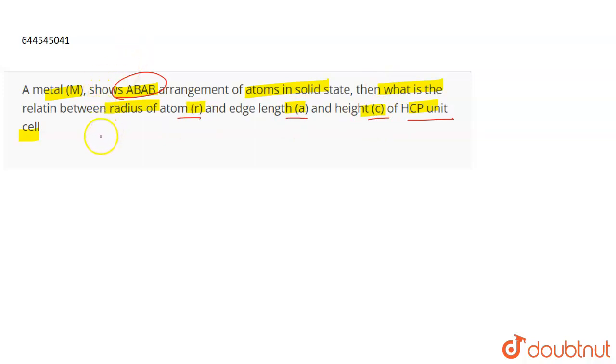Basically one thing that you need to remember is that the relationship between the edge length and the radius is actually A is equal to 2R. So for an HCP unit cell, the relationship between the edge length and the radius is A equals 2R because the atoms in the unit cell are arranged something like this.